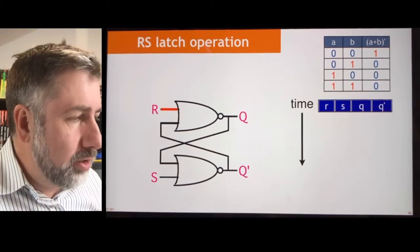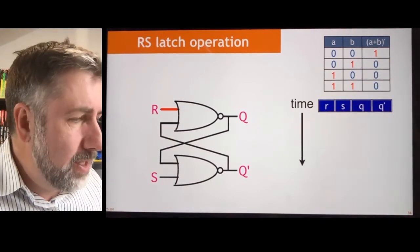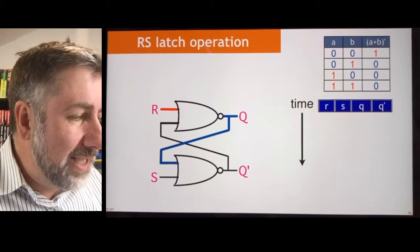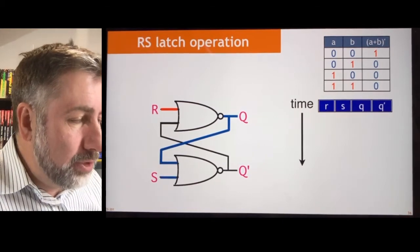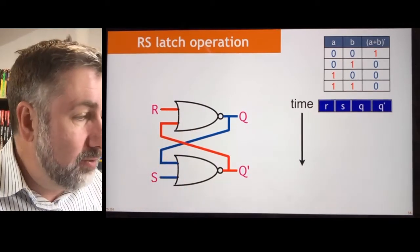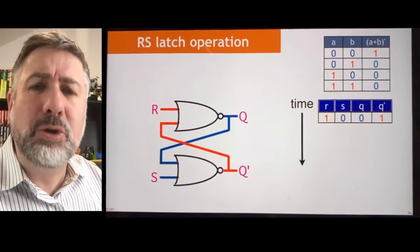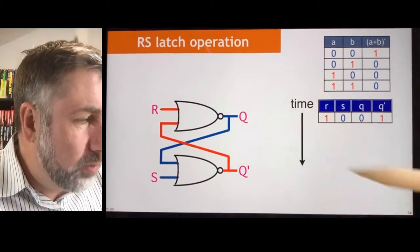I'm going to set R to 1. My red is 1 and my blue is 0. And I'm going to set S to 0. And I'm going to see these two are 0. That allows this to be a 1. That reinforces this value. And our output is 0. And our Q prime is 1. We sort of get Q prime for free. But Q is the one we're looking for.